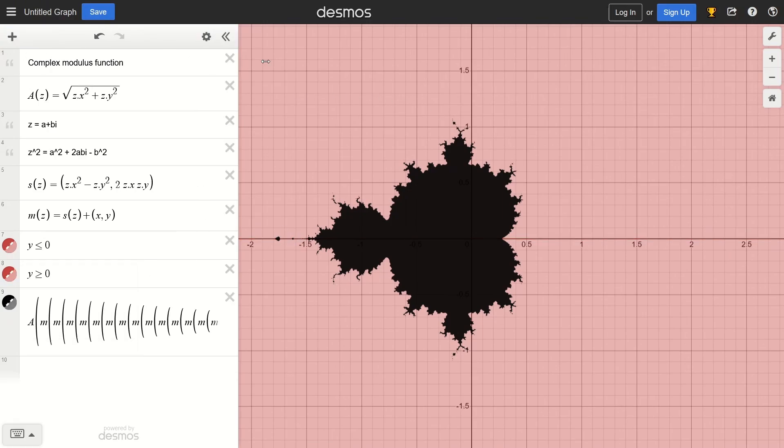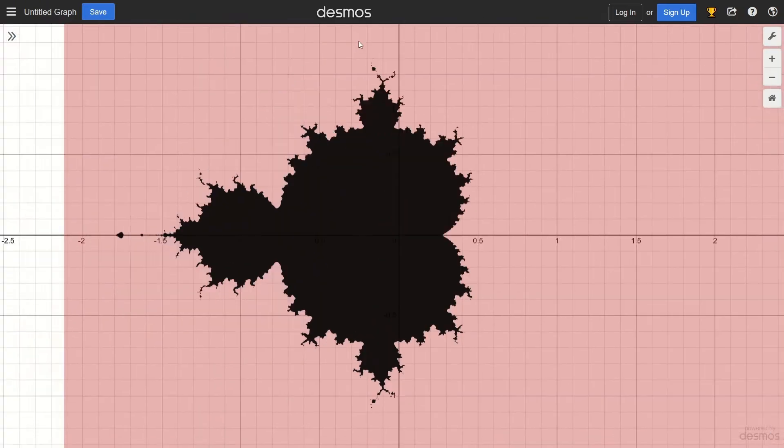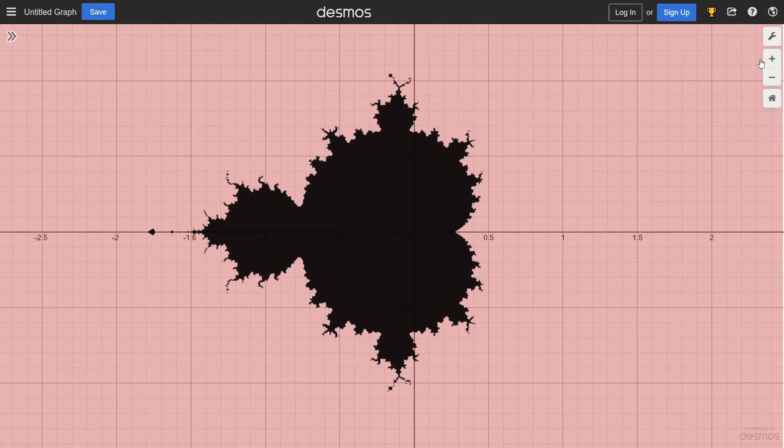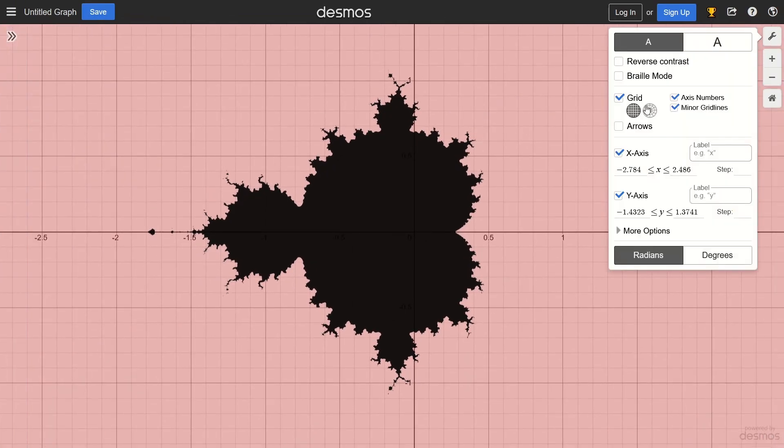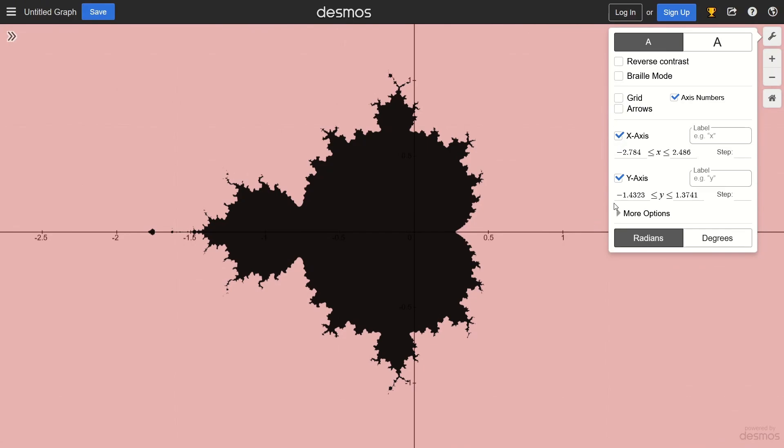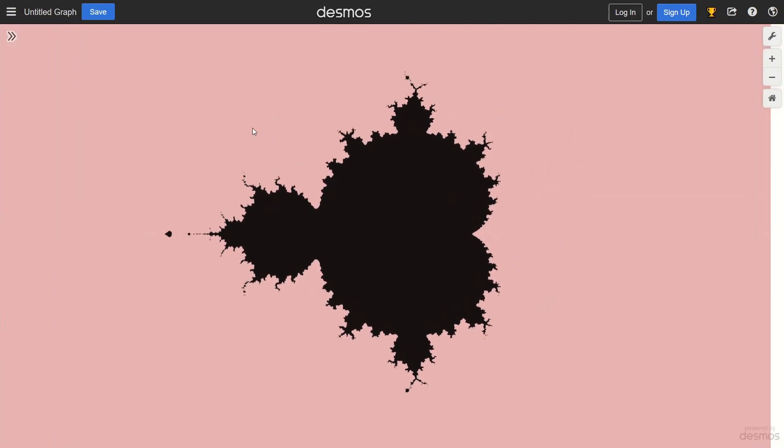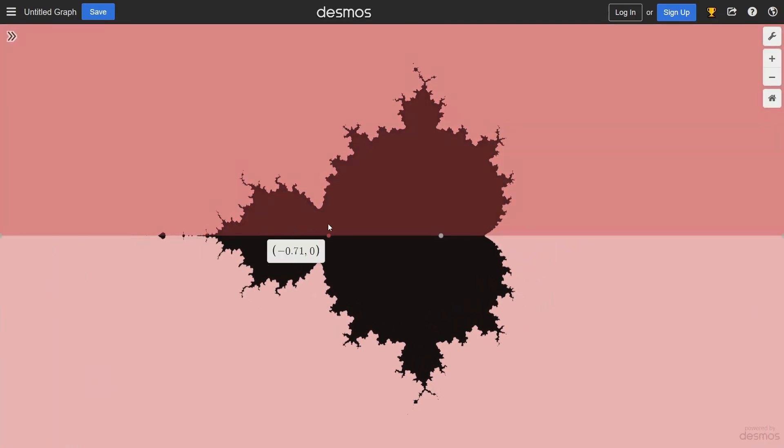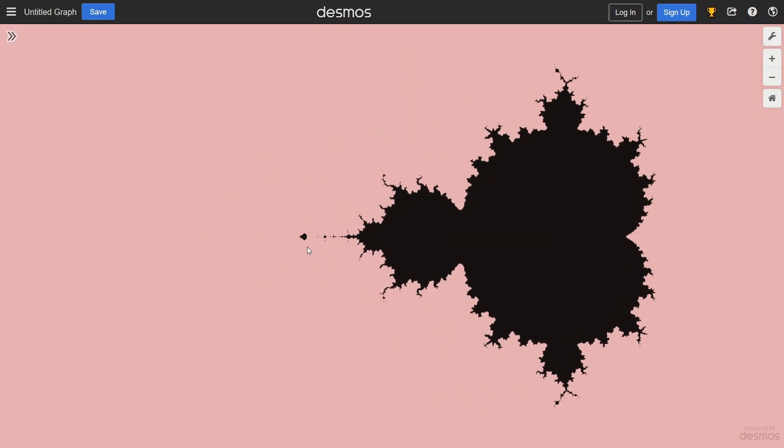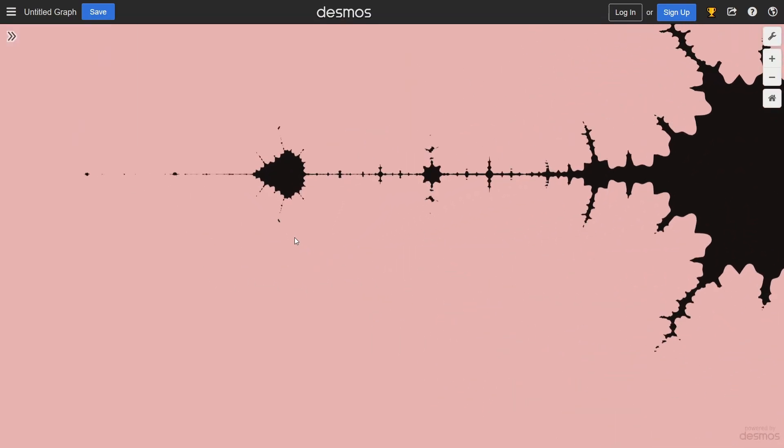One more thing that you might wanna do, we can hide this expression list because it's correct now. Go to graph settings, we turn off the grid, and you might wanna turn off the axis. Now you just get the graph. You can adjust the colors, play around with the transparency settings, and here we have the Mandelbrot set.